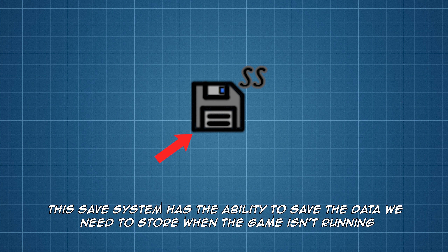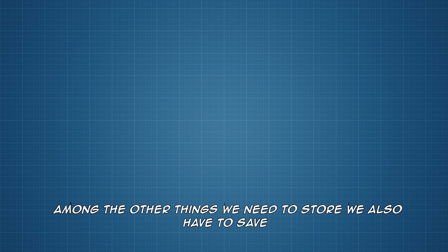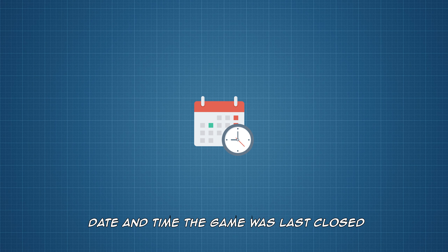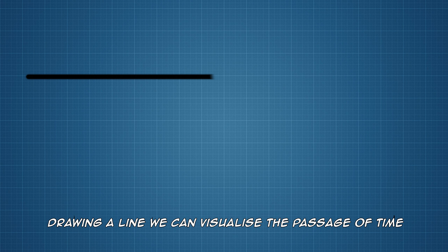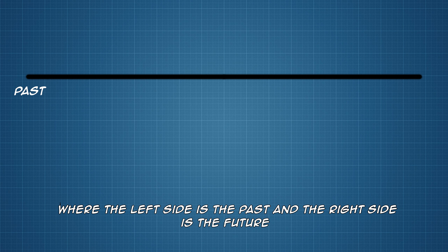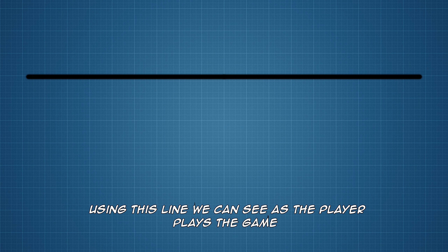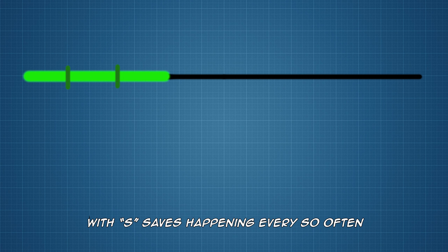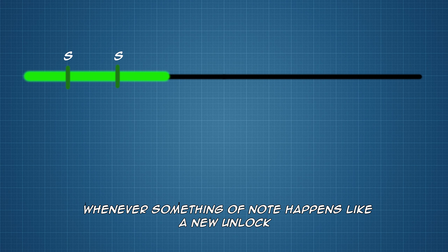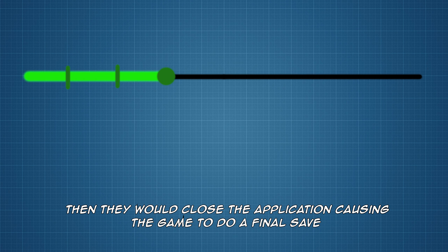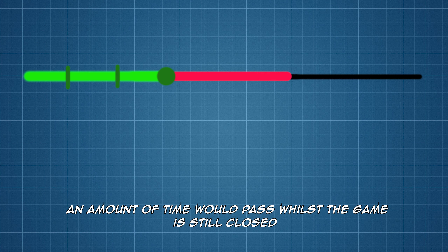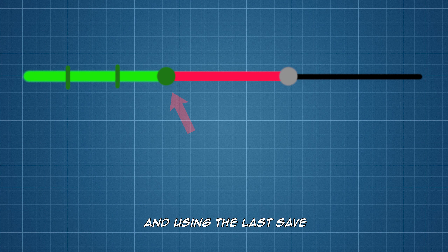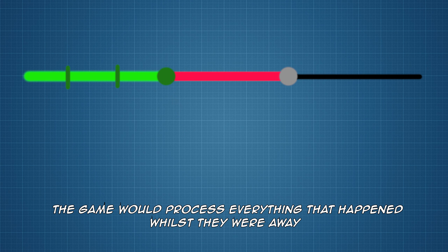This save system has the ability to save the data that we need to store when the game isn't running. Among other things we need to store, we also have to save the date and time the game was last closed. Let's use S to indicate whenever the game saves. Drawing a line, we can visualize the passage of time, where the left side is the past and the right side is the future. We can see as the player plays the game, with S saves happening every so often whenever something of note happens, like a new unlock. Then they would close the application, causing the game to do a final save. An amount of time would pass whilst the game is still closed, and then they would open the game again, and using the last save, the game would process everything that happened whilst they were away.